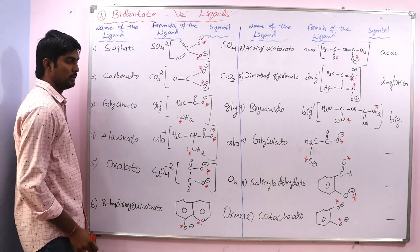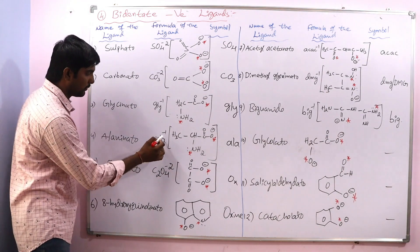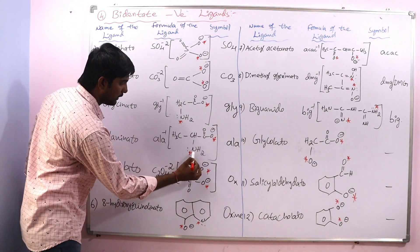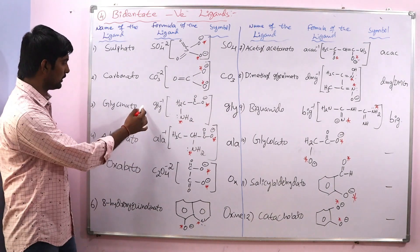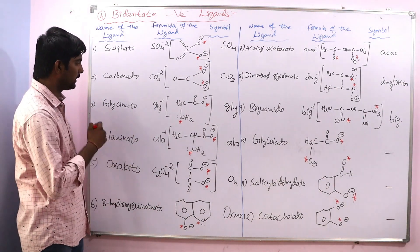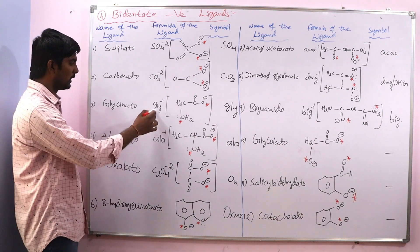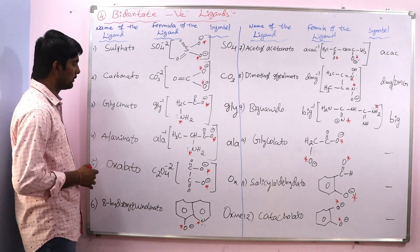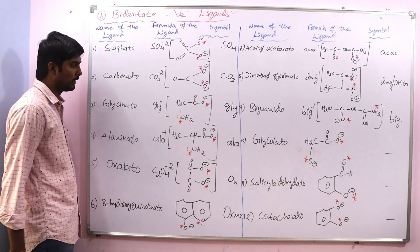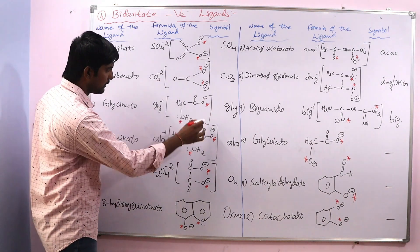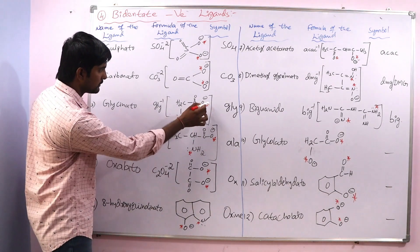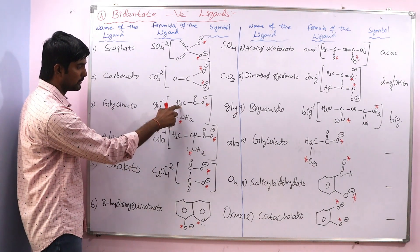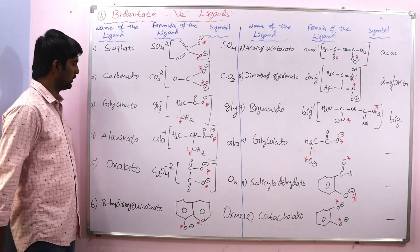Next is alaninate, ALY⁻¹. Here also oxygen and nitrogen are the donor atoms. Look at the difference between glycinate and alaninate — they are both generated from amino acids: glycinate from glycine and alaninate from alanine. This entire unit is the same; the only difference is that in alaninate, in place of hydrogen we have a methyl group.